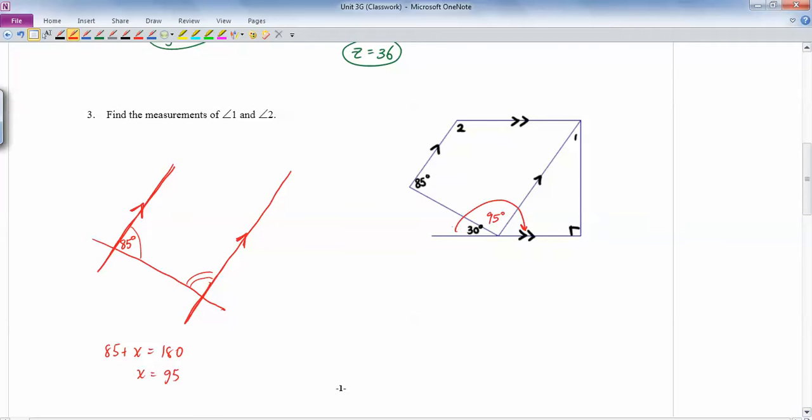So 85 plus something would equal 180. And something would end up being 95 degrees. So that was this angle right here. Well, these three angles put together have to be 180. So 30 plus 95 plus y equals 180. And if you solve for y, you end up with 55 degrees. 180 minus 30 plus 95 together. So y ends up being 55.